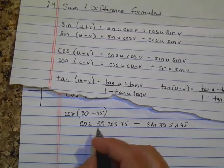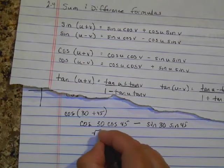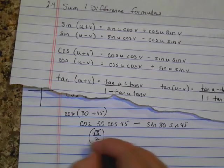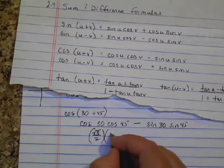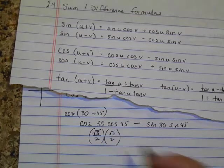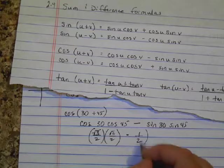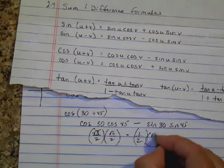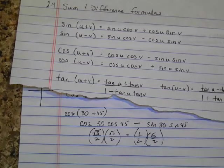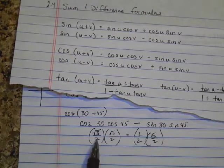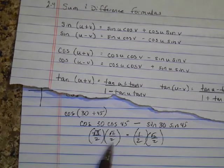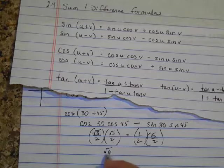The cosine at 30 is square root of 3 over 2. You can find that by using your unit circle. Cosine of 45 is square root of 2 over 2. Subtract sine of 30, which is 1 half, times sine of 45, which is square root of 2 over 2. So here, when you multiply fractions, you multiply straight across. So I get square root of 6 over 4.